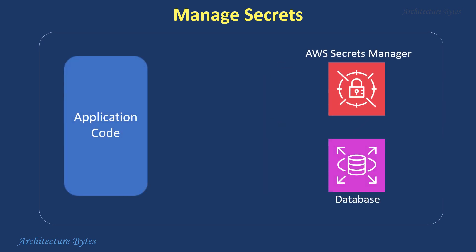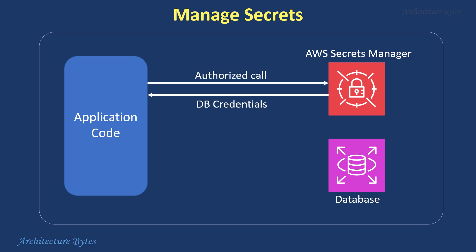Here is an example of how you would use AWS Secrets Manager. DB credentials are stored in the Secrets Manager, which are fetched by the application code and then used to connect to the database. Therefore, the DB credentials are not hard-coded in application code and exist safely in Secrets Manager with access control, automatic rotation and auditing.